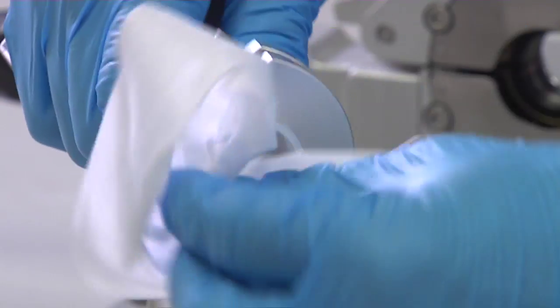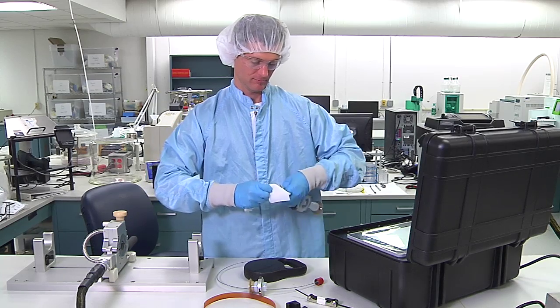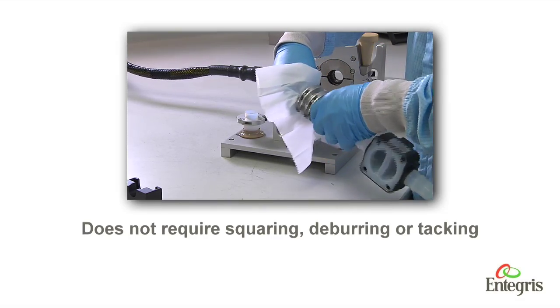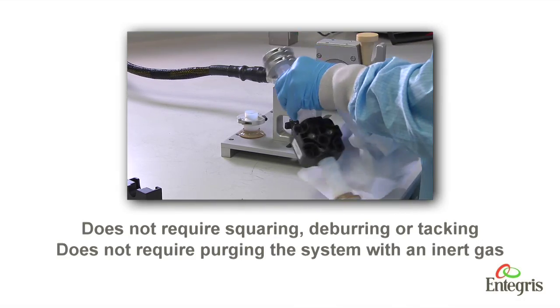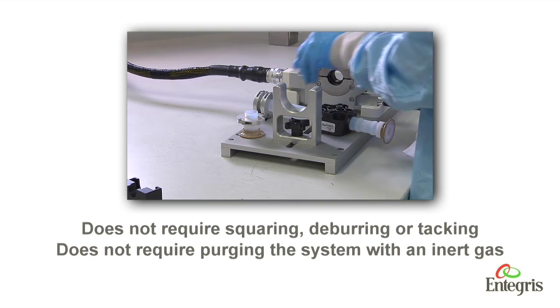Unlike stainless steel orbital welding, the Synergy Weld in Place process does not require squaring, deburring, or tacking of the tubing, nor does it require purging the system with an inert gas.